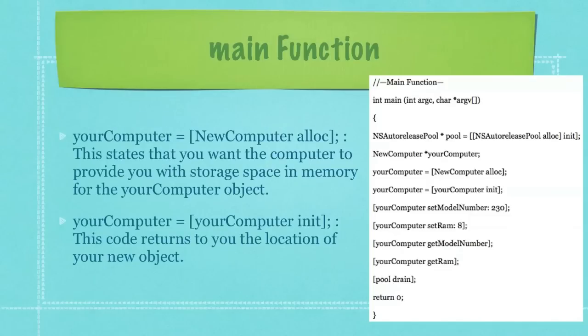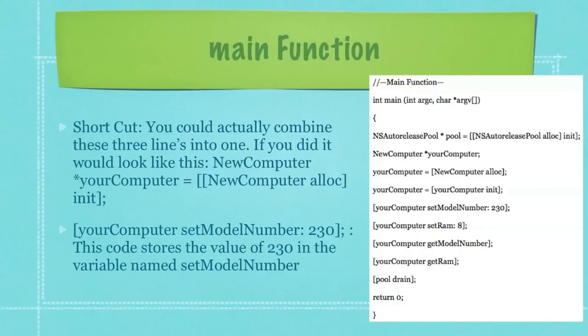The next line of code states that you want the computer to provide you with storage space in memory for the yourComputer object. And then the next line of code returns to you the location of your new object. If you look over to the left side of your screen, you could also actually combine these three lines into one. And if you did that, it would look like what you can see here under the first bulleted item. NewComputer followed by star, yourComputer equals, so forth and so on.